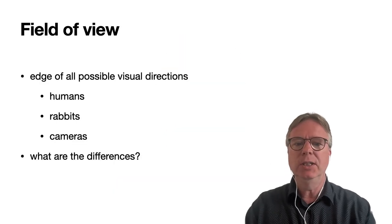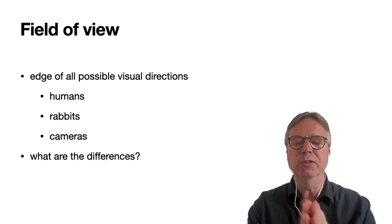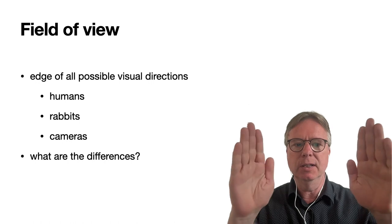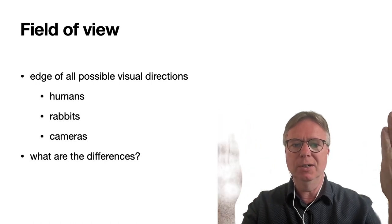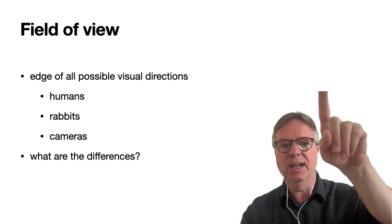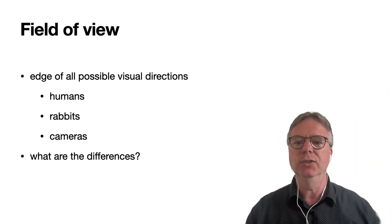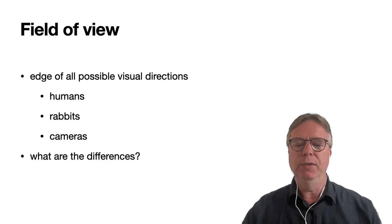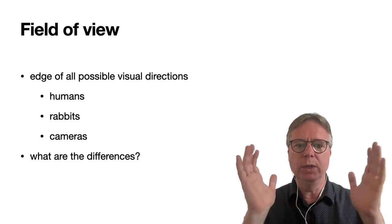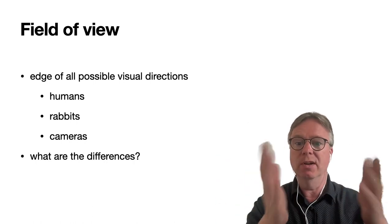Basically, the field of view is the edge of all possible visual directions. If I had the camera view, oh that's not going well, these are the edges and there's a corner, and those are the extreme visual directions. The field of view is the whole thing that an animal or a human or a rabbit or a camera can see.